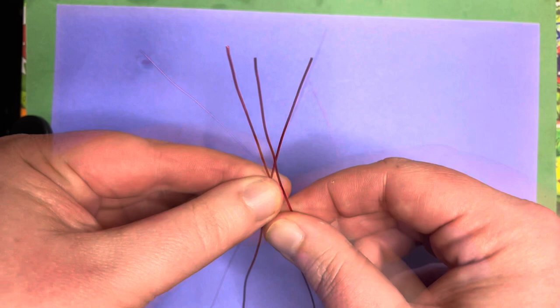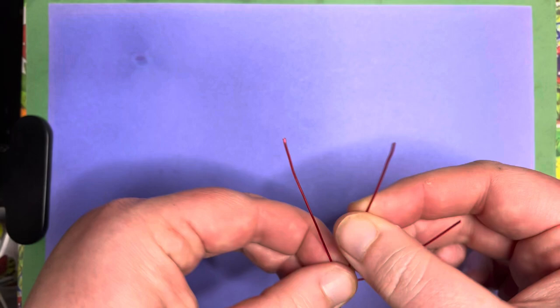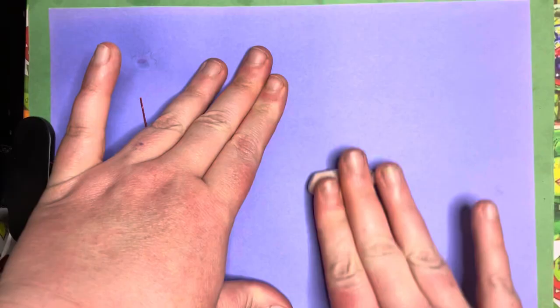The first thing we want to do is get our wire. So we need three pieces for those six legs. Take those and then in the middle just twist those together, add your third one, twist that around. It doesn't have to be perfect. We will be covering all of this with clay.